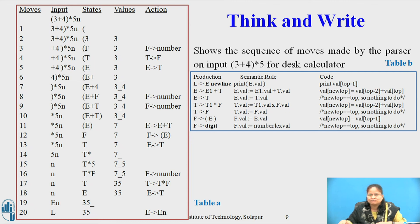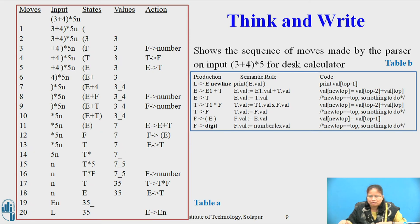On the tenth move, the parser shifts the state corresponding to the token right parenthesis onto the stack. The state is represented by right parenthesis and no value is in the val field. On the eleventh move, the parser reduces by E → E1 + T and implements the semantic rule E.val = E1.val + T.val. The state is represented by E and the value 7 is in the val field. After each reduction, the top of the val stack contains the attribute value associated with the left side of the reducing production.